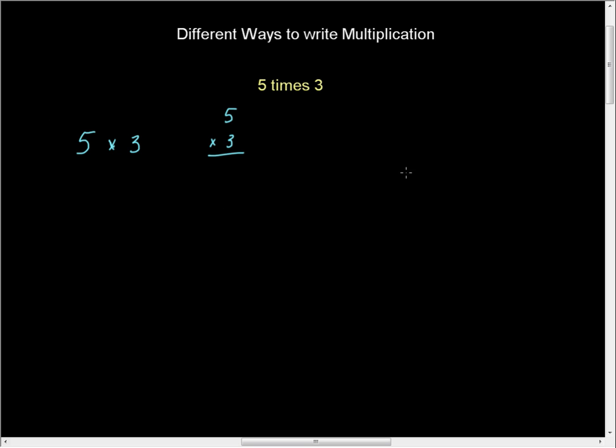And so, very typically, you'll move away from using an x, and you'll say 5, and a solid dot is times. So 5 times 3.